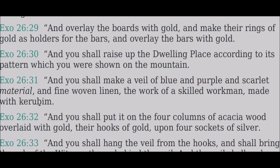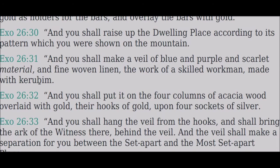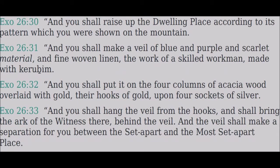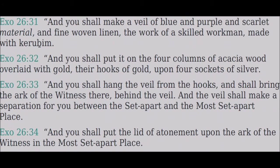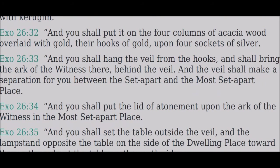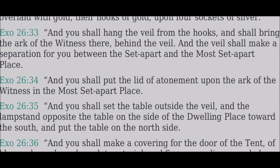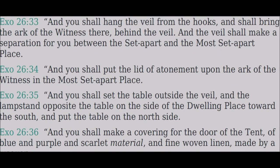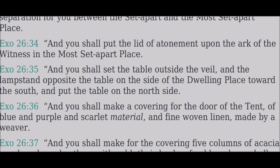Make a veil of blue and purple and scarlet material and fine woven linen, the work of a skilled workman, made with keruvim. Put it on four columns of acacia wood overlaid with gold, their hooks of gold upon four sockets of silver. Hang the veil from the hooks, and bring the ark of the witness there behind the veil. The veil shall make a separation between the set-apart and the most set-apart place. Put the lid of atonement upon the ark of the witness in the most set-apart place. Set the table outside the veil, and the lamp-stand opposite the table on the south side, and put the table on the north side.